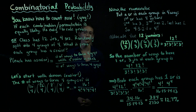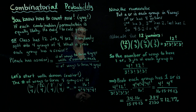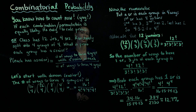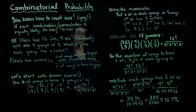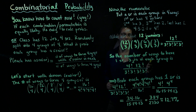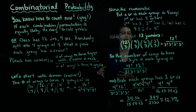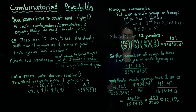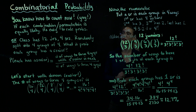Now that we know how to do some basic combinatorics, we can now do combinatorial probability. If each of these combinations or permutations that you've been calculating in the last few videos is equally likely, then it's going to be pretty easy to calculate these probabilities. We'll do an example to show what the steps would look like.